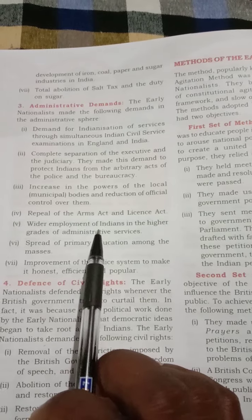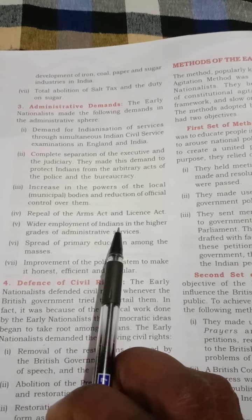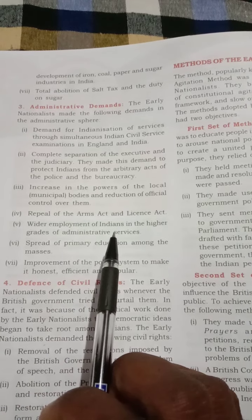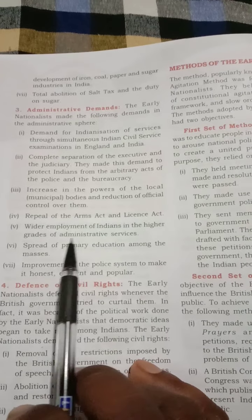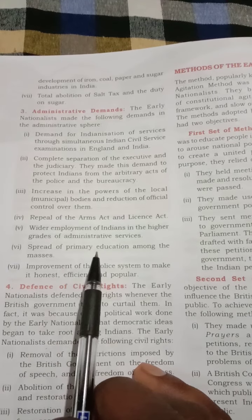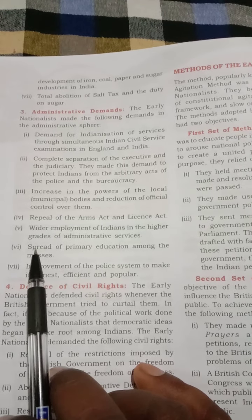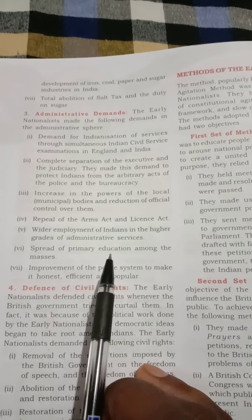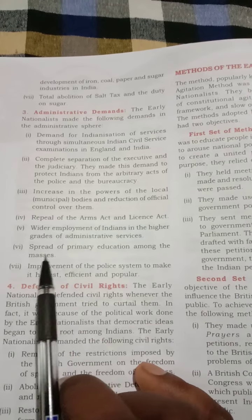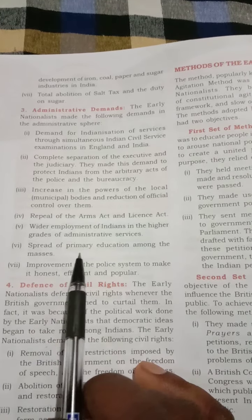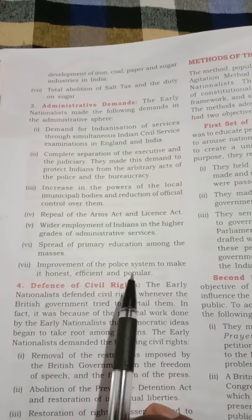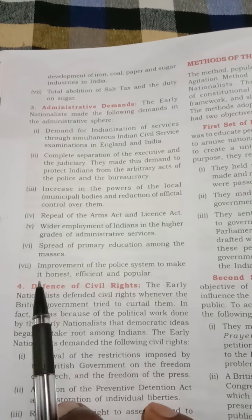The fifth demand was for wider employment of Indians in the higher grades of administrative service — Indians should be given much more importance in higher-level government jobs. The sixth demand was for the spread of primary education among the people, and the British should focus on primary education by opening a large number of primary schools.